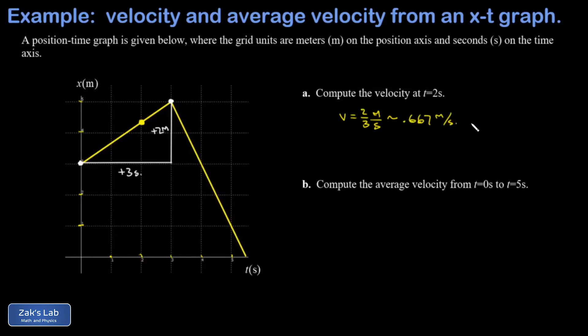In part B, we're asked for the average velocity from t equals zero to t equals five seconds. And we recall that the average velocity is the slope of a line connecting two points on the position-time graph. And so again, we just look at rise over run between these two points.